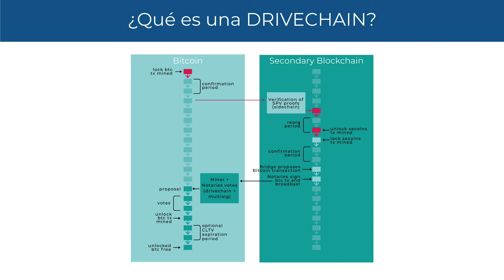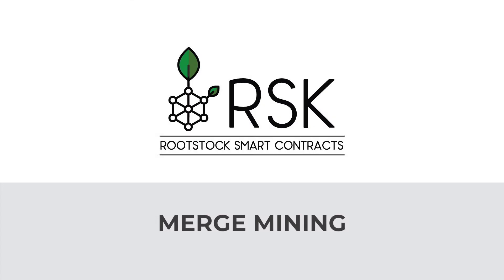As you can see on the screen, on the RSK side we have a sidechain using SPV proof, and on the Bitcoin side we have a drivechain plus a multi-signature federation. RSK uses a method called merge mining. Merge mining is unique because it allows the miners who are already securing the Bitcoin blockchain — using proof of work — to also join the RSK network and secure that blockchain using the same amount of hashing power and electricity.